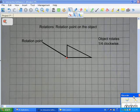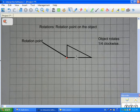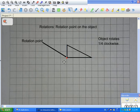Welcome to Rotations, where we're going to be rotating around a point that is attached to an object. So our object over here is a triangle, and our point, our rotation point, is indicated as this red dot.